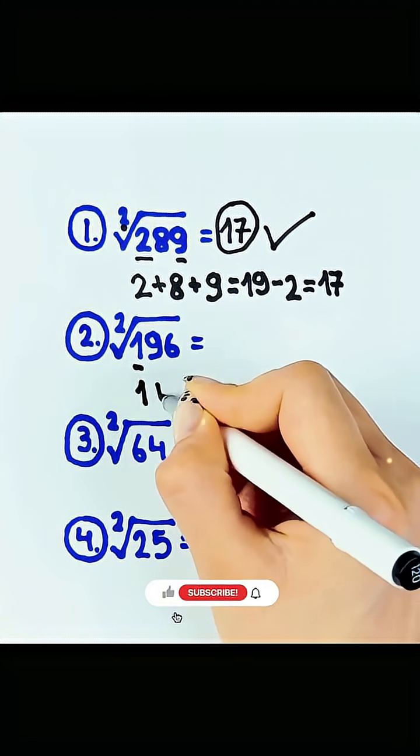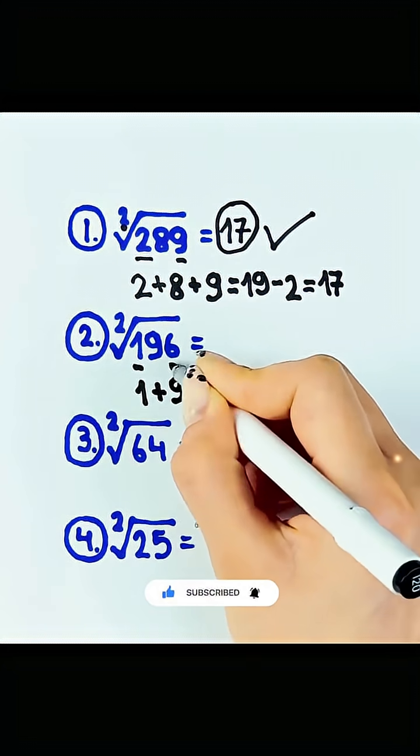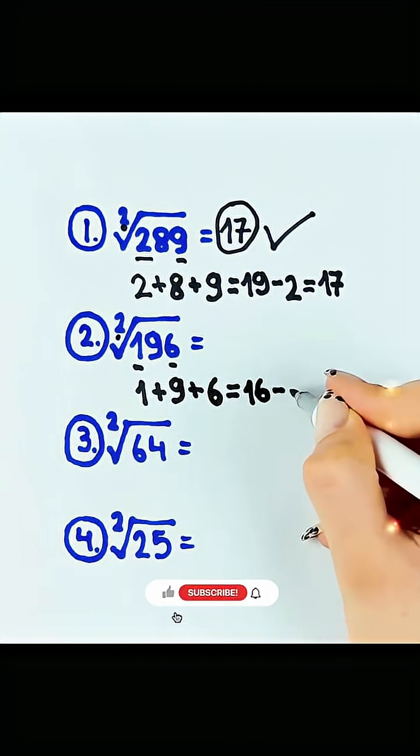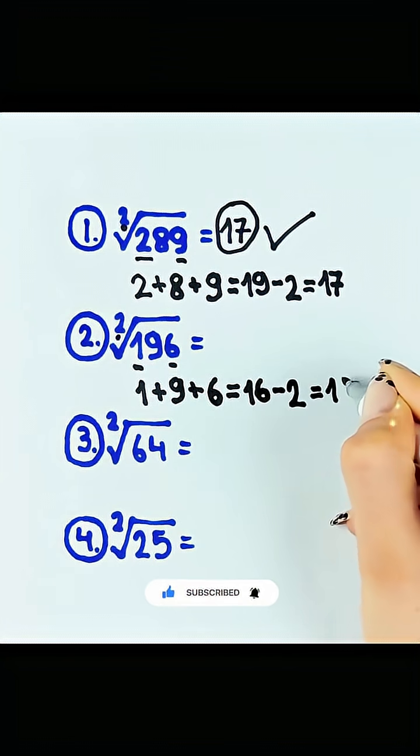Next, let's look at another set of numbers. Add 1, 9, and 6, which equals 16. Subtract 2 again, and you get 14.